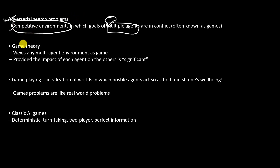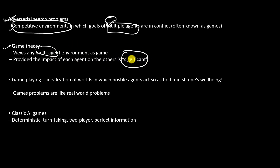Adversarial search deals with game theory. In game theory, there are multiple agents in the environment — it's treated as a game — and the impact of each agent on the other is significant. Your next move, or whatever you are going to do, depends on how your opponent moves. This is how game theory works.